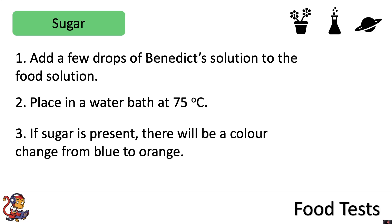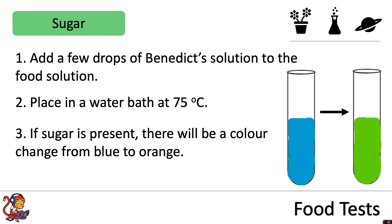You may also see some different colour changes depending on how much sugar is in the food solution. For example, if there's a little bit of sugar you might just see a colour change from blue to green. The most common colour change is from blue to orange, so that's the one that you need to remember. If there is lots of sugar present you may also see a colour change from blue to a brick red colour.